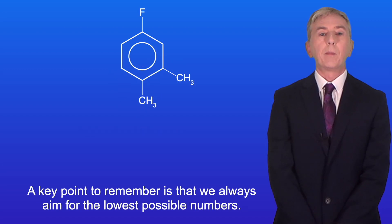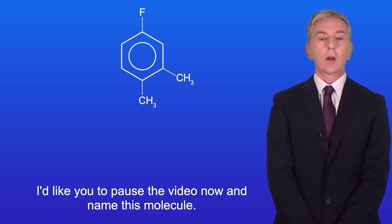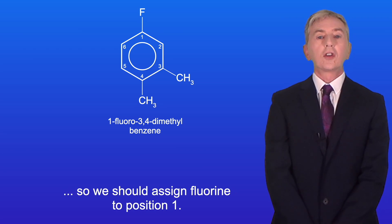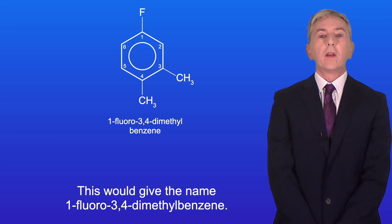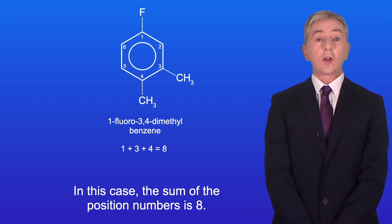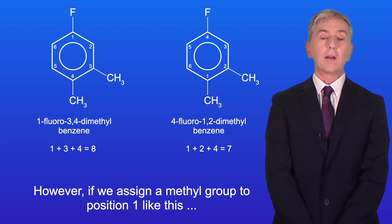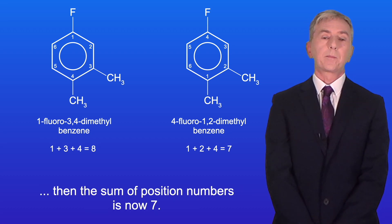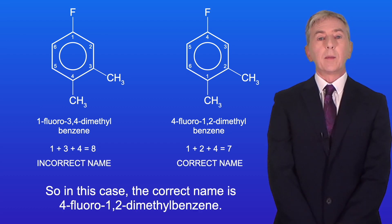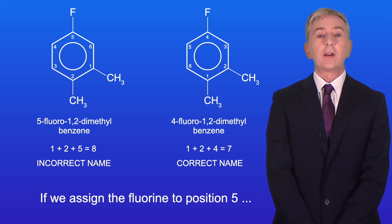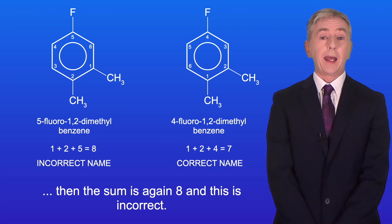A key point to remember is that we always aim for the lowest possible numbers. Alphabetically, fluorine comes before methyl, so we should assign fluorine to position 1. This would give the name 1-fluoro-3,4-dimethylbenzene, where the sum of position numbers is 8. However, if we assign a methyl group to position 1, then the sum of position numbers is now 7. So in this case the correct name is 4-fluoro-1,2-dimethylbenzene. Remember that substituents are listed alphabetically with the lowest possible numbering.